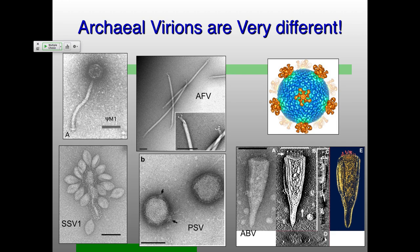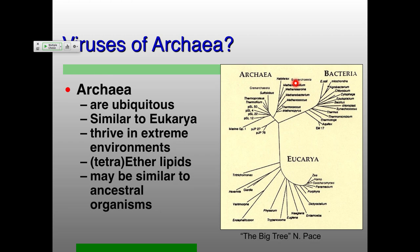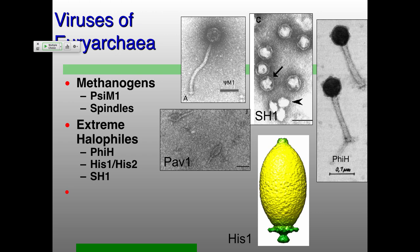The archaea are really divided into two major groups: Crenarchaea, including Sulfolobus, and Euryarchaea, which contains the methanogens and extreme halophiles. This was for a long time the only grouping in archaea, and still today these are the main groups that can actually be cultivated. Cultivation means you can study them and study their viruses reasonably well.